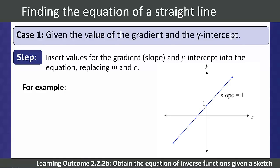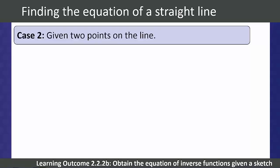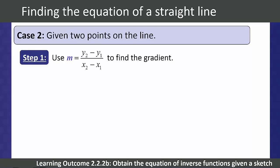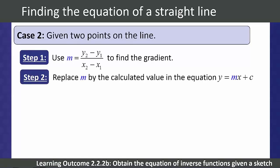Here we have been given a y-intercept of 1 and a slope of 1. We substitute into the formula for a straight line y equals mx plus c, and we find our equation to be y equals x plus 1. Case 2: students are given two points on the line. We can use the formula y2 minus y1 over x2 minus x1 to find our gradient m.